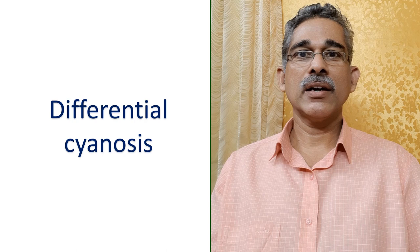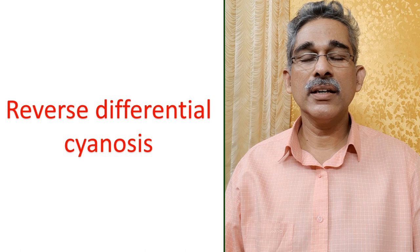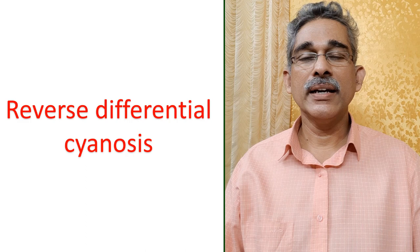Upper limbs are spared because desaturated blood does not reach the upper limbs. Reverse differential cyanosis occurs in dextro-transposition of great arteries with reversal of flow across the patent ductus arteriosus. This can occur either due to severe pulmonary hypertension or when there is a pre-ductal coarctation of aorta or aortic arch interruption.